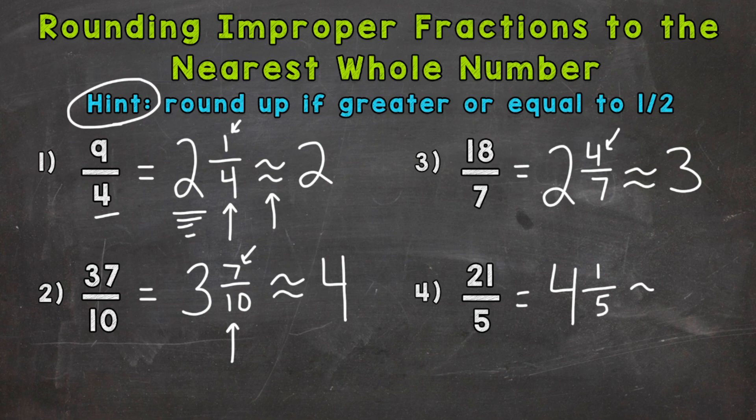So 1 fifth, we need to determine, is that greater or equal to a half or less? Well, half of 5 is 2 and a half, so this one is less than half, and we stay the same at 4.